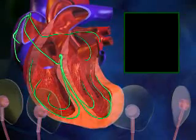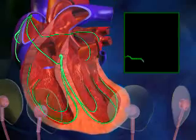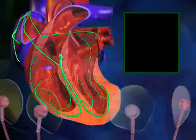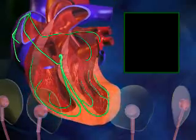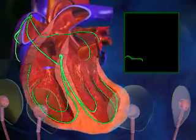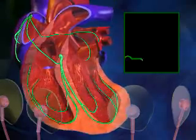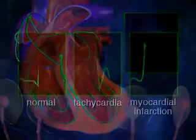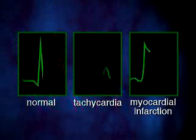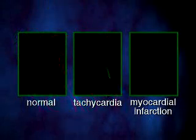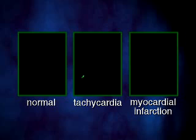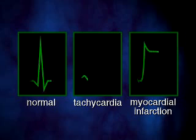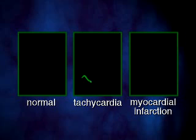A stress test usually involves walking or running on a treadmill at progressively increasing intensities while recording an ECG. This test allows a doctor to examine the heart's electrical activity during the stress of exercise.